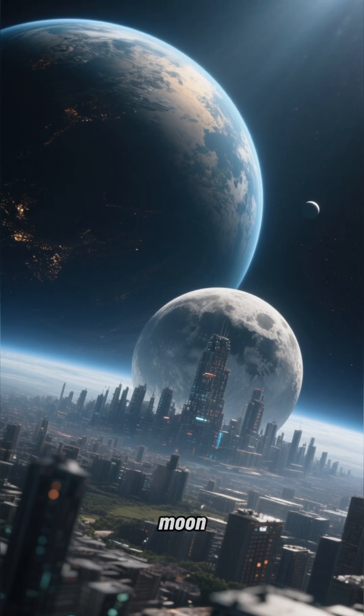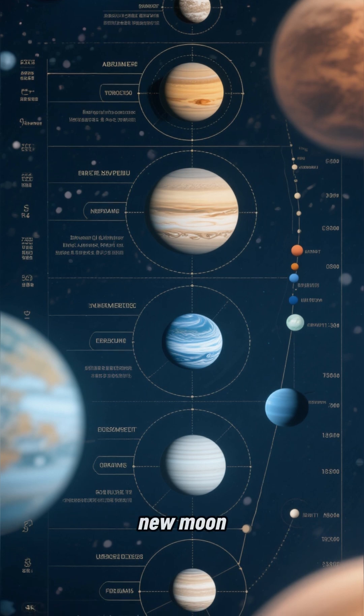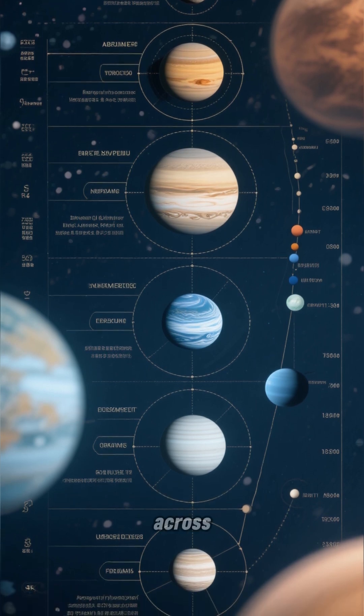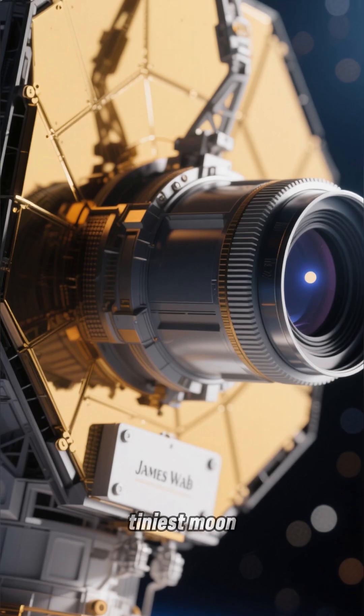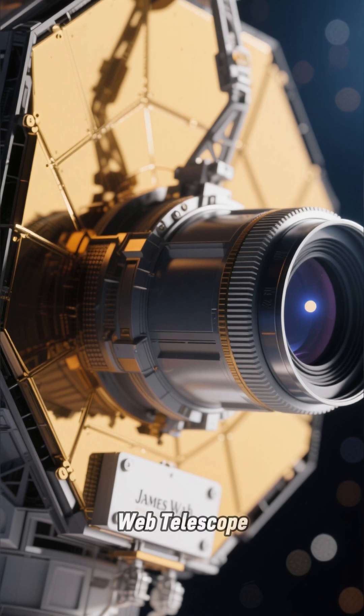You won't believe the size of this new moon. It's the size of a city. Uranus just gained a new moon and it's only about six miles across. That makes it the tiniest moon we've spotted around the planet so far.